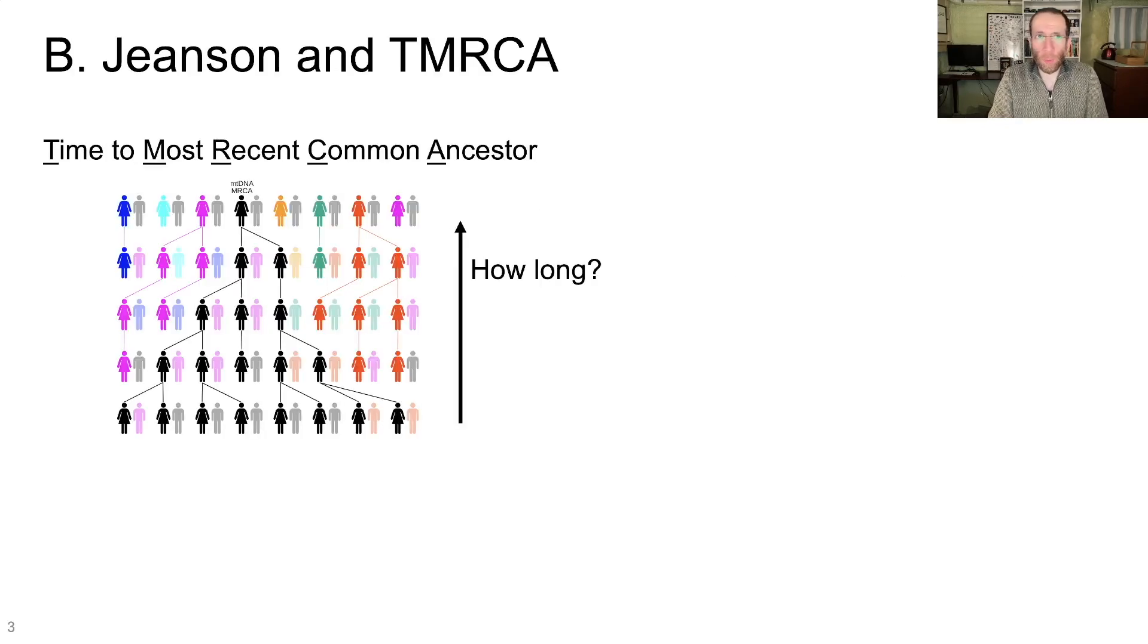Before we get into what the problem is, we have to establish a bit of a foundation, and we're going to start with Nathaniel Jeanssen and the concept of a time-to-most-recent common ancestor. What in the world is a TMRCA? Basically, the idea with the time-to-most-recent common ancestor calculations is you want to know, for some population of individuals, how far in the past they shared a common ancestor, and that's what's illustrated with this figure right here.